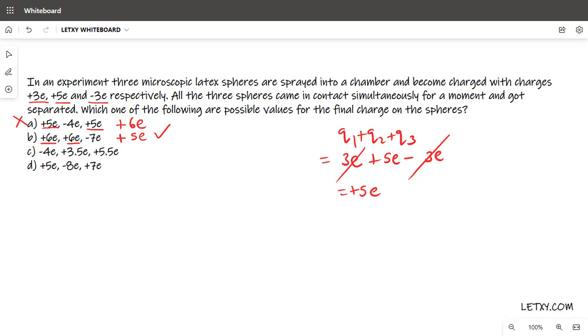Option C: Let's add them - 3.5 plus 5.5 equals 9, 9 minus 4 equals +5e. So this could also be the correct option. We will discuss it further.